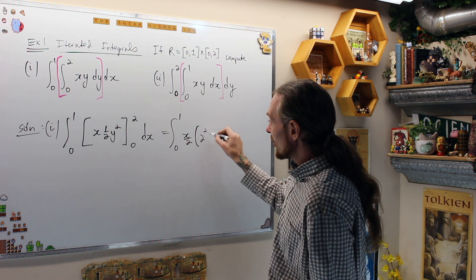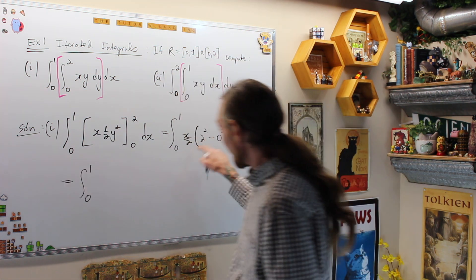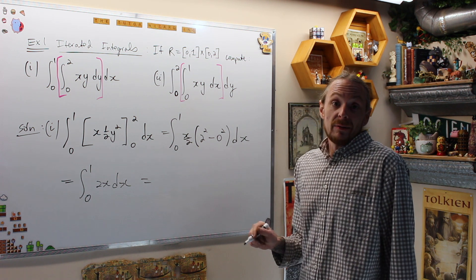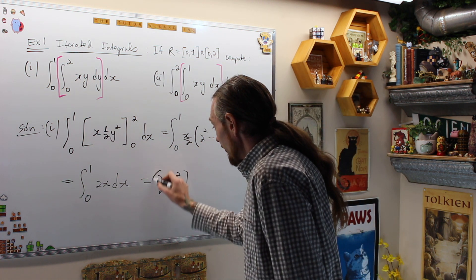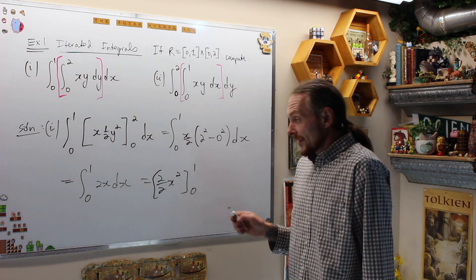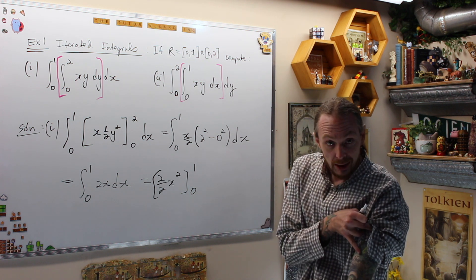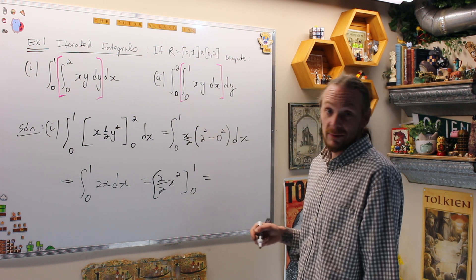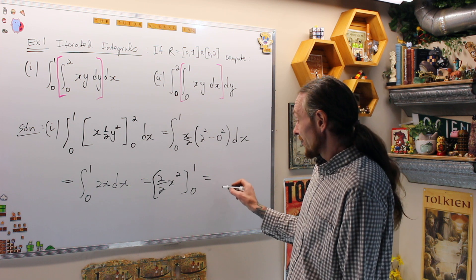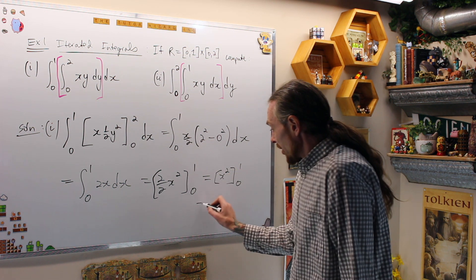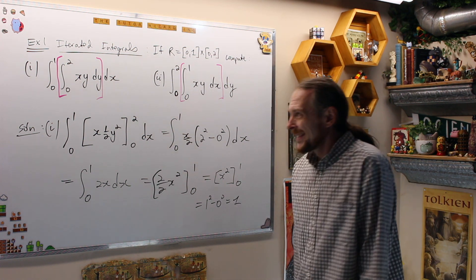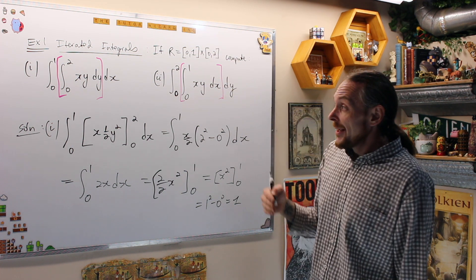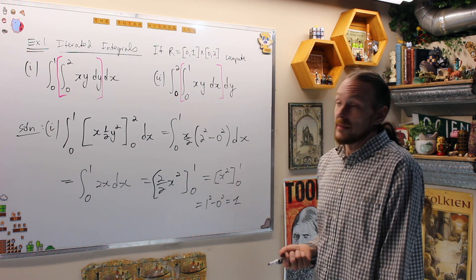Now I use the Fundamental Theorem of Calculus Part 2 to compute the inner integral from 0 to 2. That gives me x over 2 times (2 squared minus 0 squared) dx. Cleaning this up, we get the integral from 0 to 1 of 2x dx. Integrating with respect to x gives 2/2 · x squared = x squared, evaluated from 0 to 1, which gives 1 squared minus 0 squared = 1. The volume above the rectangle [0,1] cross [0,2] under the surface is 1.